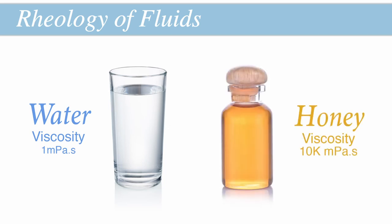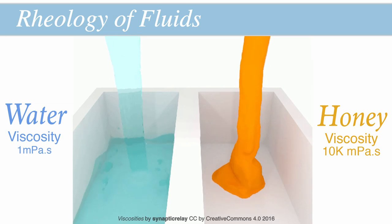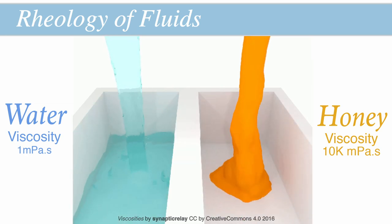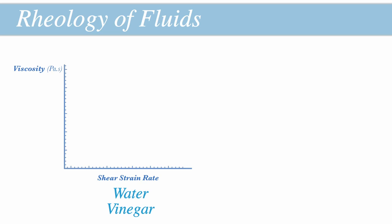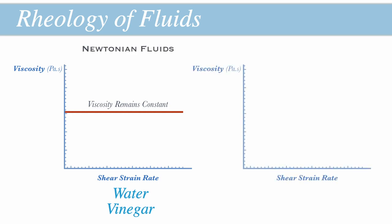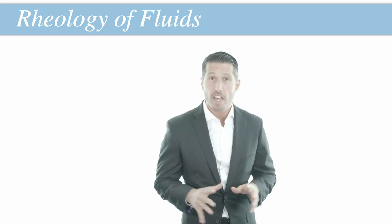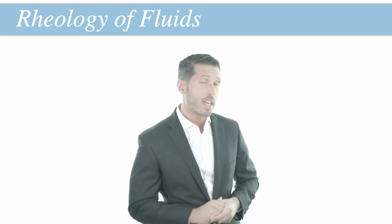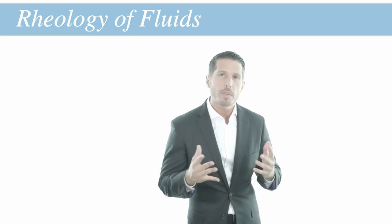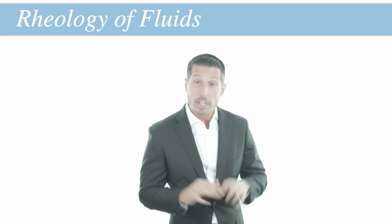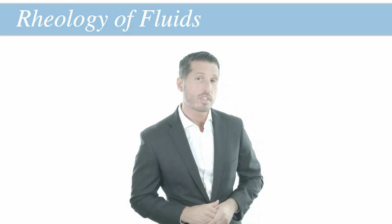If you pour water and honey into separate containers, you'll see that water flows more rapidly to spread across the container compared to honey. Some fluids like water and vinegar are simple and predictable, having a constant viscosity regardless of conditions, and are known as Newtonian fluids. Other fluids like molasses are not as predictable because their viscosity varies with the rate of flow — they are known as non-Newtonian fluids. Hyaluronic acid fillers, being gels, are also non-Newtonian in their behavior. But in order to understand why this is relevant, we must first define what a gel is, and to do so we have to go back to basic chemistry.